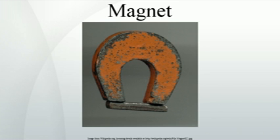Another model is the Ampere model, where all magnetization is due to the effect of microscopic, or atomic, circular bound currents throughout the material. For a uniformly magnetized cylindrical bar magnet, the net effect of the microscopic bound currents is to make the magnet behave as if there is a macroscopic sheet of electric current flowing around the surface. Microscopic currents in atoms inside the material are generally cancelled by currents in neighboring atoms, so only the surface makes a net contribution. Shaving off the outer layer of a magnet will not destroy its magnetic field, but will leave a new surface of uncancelled currents.